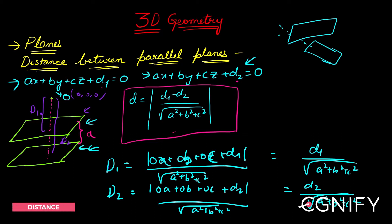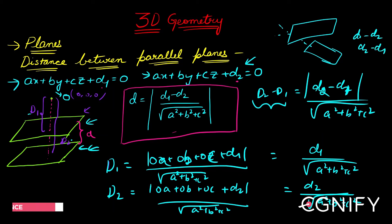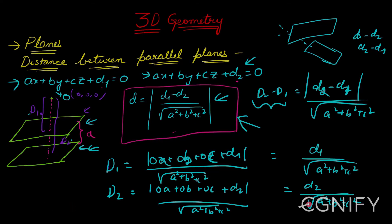What you need to do is simply subtract D2 from D1, so the distance d equals |d1 − d2| divided by √(a² + b² + c²). To make sure this quantity is always positive, we put a modulus — so whether you take d1 − d2 or d2 − d1, it won't make a difference. This is the formula for the distance between two parallel planes.